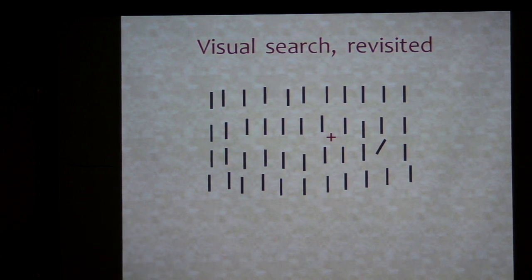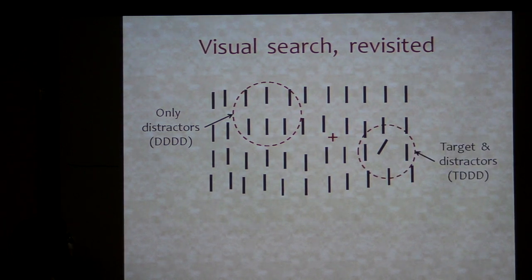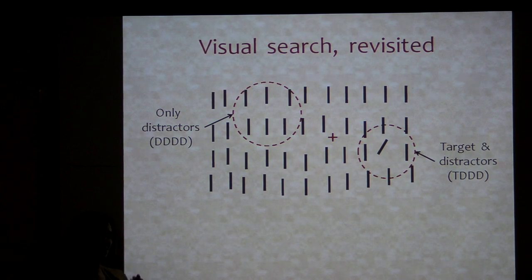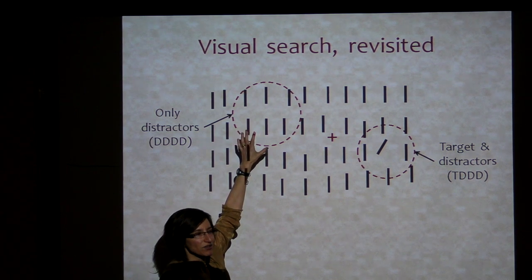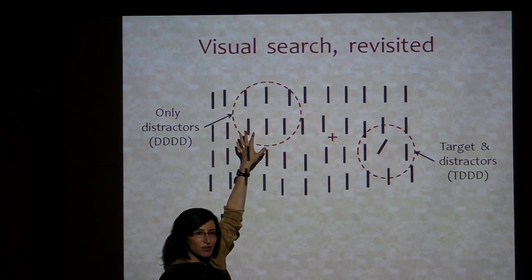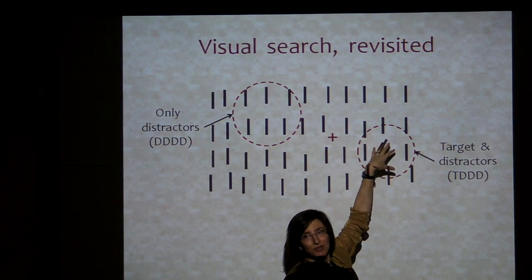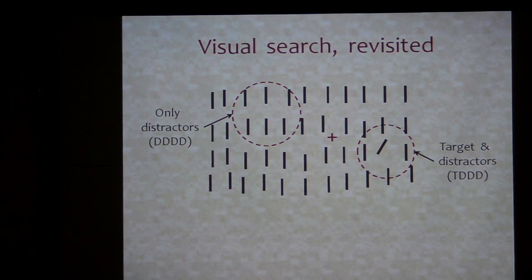How do we rethink search given what we're thinking about crowding? If you're looking at a particular fixation, you have these pooling regions, and one of the pooling regions probably lands on a bunch of items. One of the things we're arguing is that search is not about individual items. The task to the visual system is to decide whether you've got a big patch containing multiple distractors, versus having a big patch containing a target and multiple distractors. We would argue it has to make this decision based on the summary statistics of those two patches.